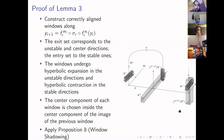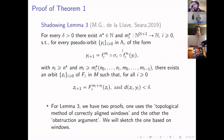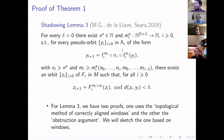I've rushed through this to explain how the method of correctly aligned windows proves one of the shadowing lemmas used in the work with Capiński and de la Llave. A more sophisticated version of this windowing method is used in the computer-assisted proof of Arnold diffusion with Capiński in the subsequent work — the rigorous proof with quantitative estimates. I think I managed not to take too much extra time, so I'll stop here. Thank you.